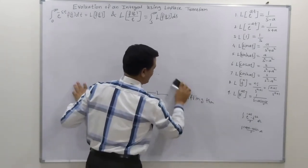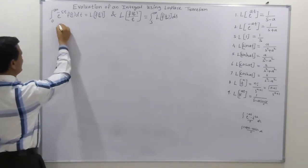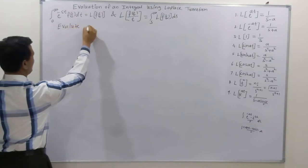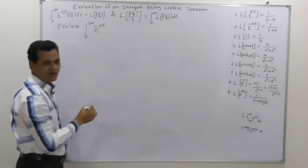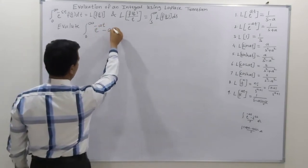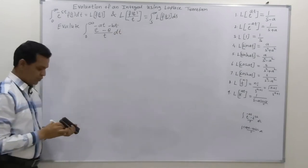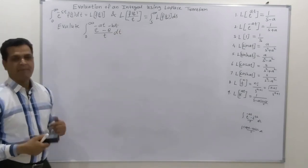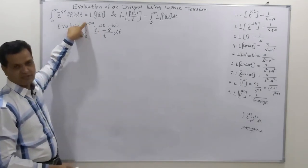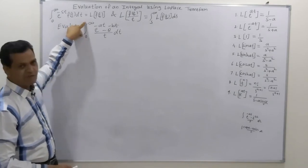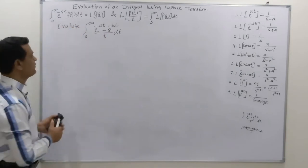For the first example, evaluate ∫₀^∞ (e^(-at) - e^(-bt))/t dt. Since the limit is zero to infinity, we compare the given equation with the definition of Laplace transformation. We write this as ∫₀^∞ e^(-at) - e^(-bt) / t dt and apply the definition.